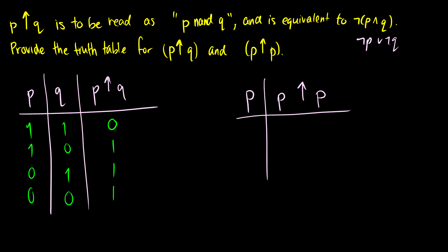We can see this is the equivalent of not (p and q) because if we have p and q then our truth table would look like 1, 0, 0, 0. So p up q is just the negation of p and q.